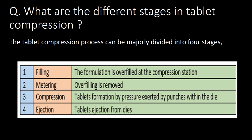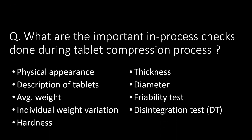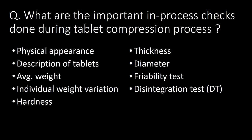What are the different stages in tablet compression? The tablet compression process can be majorly divided into four stages: Stage 1 — Filling: the formulation is overfilled at the compression station; Stage 2 — Metering: overfilling is removed; Stage 3 — Compression: tablet formation by pressure exerted by punches within the die; and Stage 4 — Ejection: tablets are ejected from the dies.